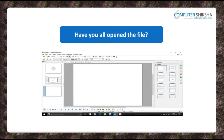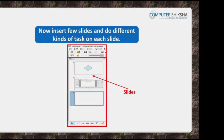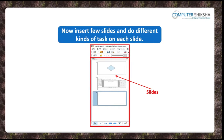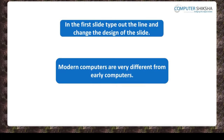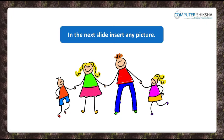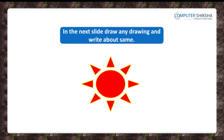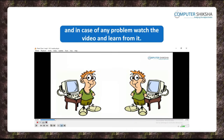Have you all opened your file? Now, all of you insert a few slides and you will be doing different kinds of work on each of them. In the first slide, type out the line being shown to you. You may also change the design of the slide if you like. In the next slide, insert a picture of your choice. Then, in the next slide, draw an image and write a line about the same. Let the last slide remain blank. If you need help, watch the video.